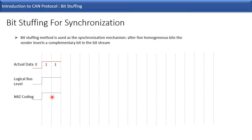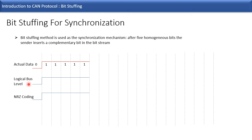The second consecutive bit is also one, the third is also one, the fourth consecutive bit is also one, and the fifth consecutive bit is also one. That means we have five homogeneous bits — five bits with a high level. After these five homogeneous bits, in the logical bus level we must stuff a bit with the opposite polarity. So here we are stuffing a bit with opposite polarity, that is zero.